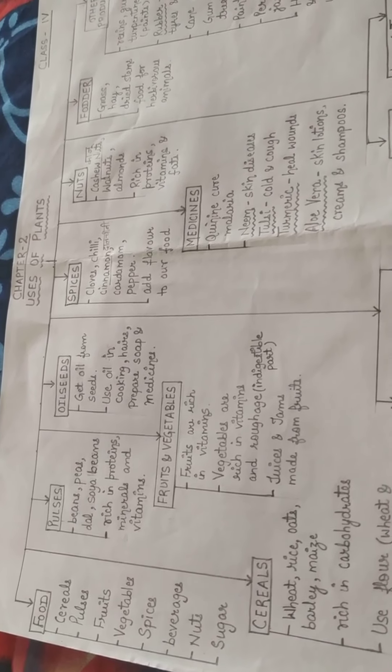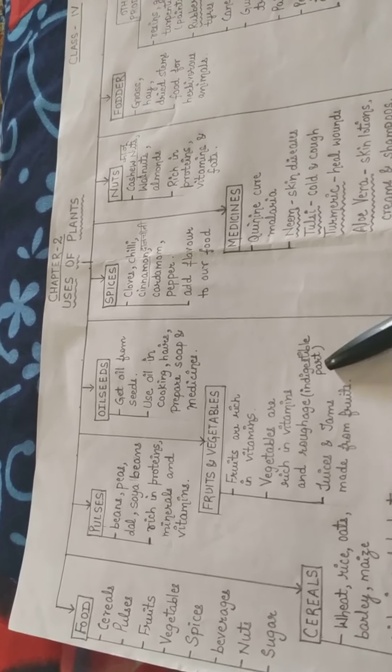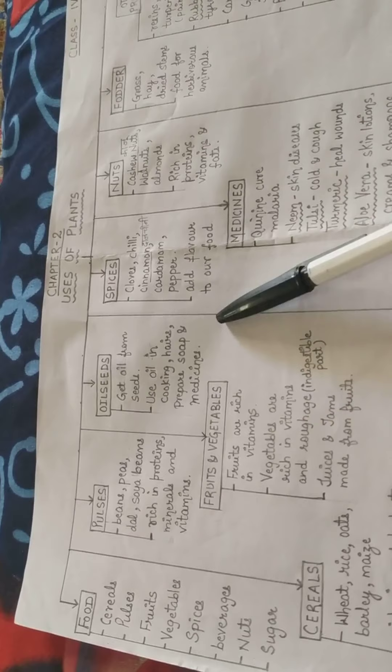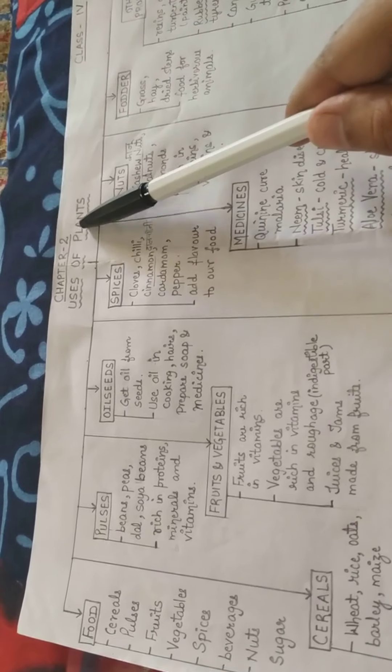Vegetables we get from plants include cabbage, cauliflower, spinach, potato, broccoli, beetroot, and onion. Vegetables are sources of vitamins and roughage. Roughage is basically the indigestible part — the part that is not easy to digest. Fruits and vegetables are rich in vitamins and we get them from plants.